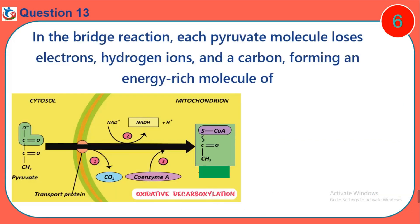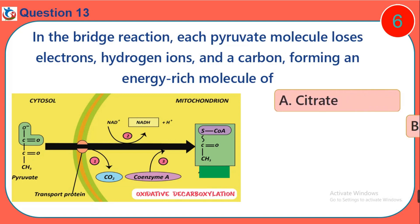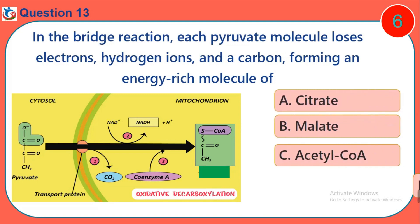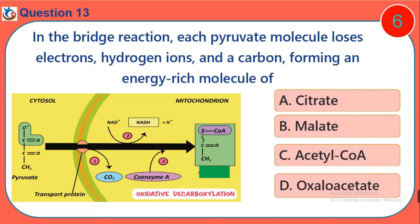Question 13. In the bridge reaction, each pyruvate molecule loses electrons, hydrogen ions, and a carbon, forming an energy-rich molecule of: A. Citrate. B. Malate. C. Acetyl-CoA. D. Oxaloacetate.